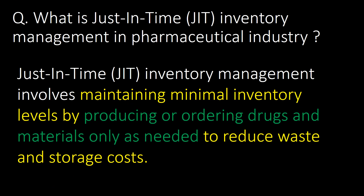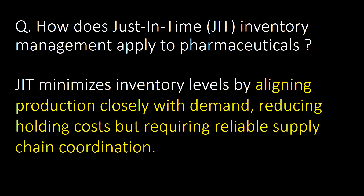What is just-in-time inventory management in the pharmaceutical industry? Just-in-time inventory management involves maintaining minimal inventory levels by producing or ordering drugs and materials only as needed, to reduce waste and storage costs. It minimizes inventory levels by aligning production closely with demand, reducing holding costs but requiring reliable supply chain coordination.